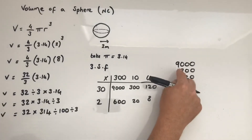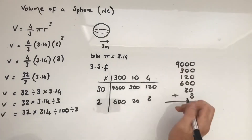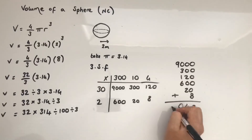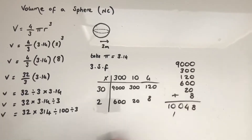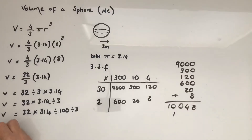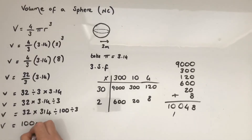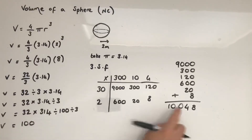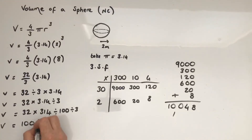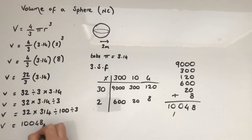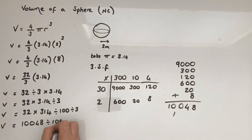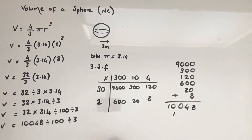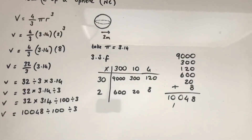So it's not 10 — it's 10,048. We still need to divide that by 100 and then by 3.